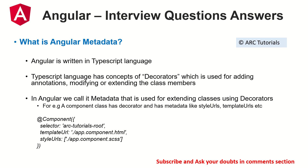Using decorators, we can extend the behavior of a certain class — in Angular we call this metadata. For example, a component class has a decorator called @Component. It takes metadata like selector, templateUrl, and styleUrls, and binds these into the template. So whenever we use directives or data binding, Angular knows which selector to bind to and through which template, because that's all part of the metadata.